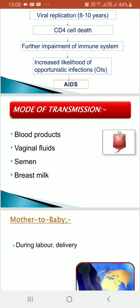The modes of transmission include blood products — needle stick injury, blood transfusion — which can affect health workers or injectable drug abusers. Vaginal fluids during delivery or during sexual activity, semen during sexual activity, and breast milk — when a mother breastfeeds a baby, the infection can also be transmitted that way.